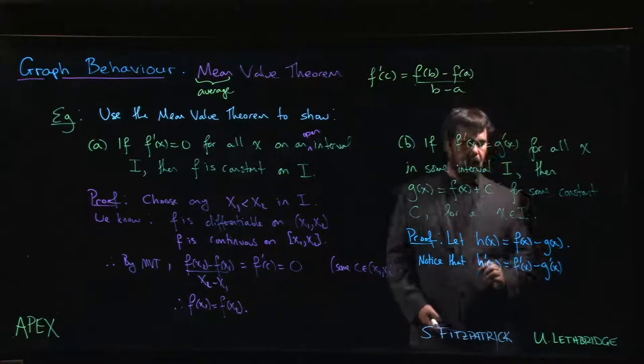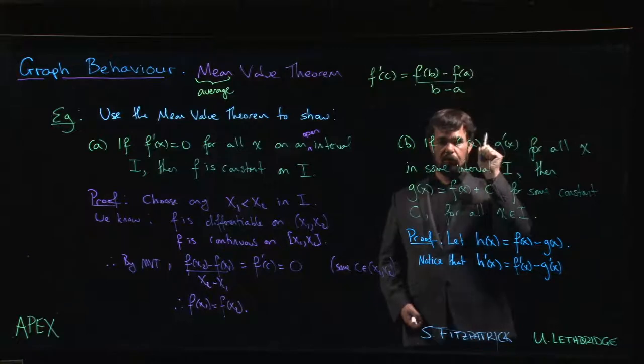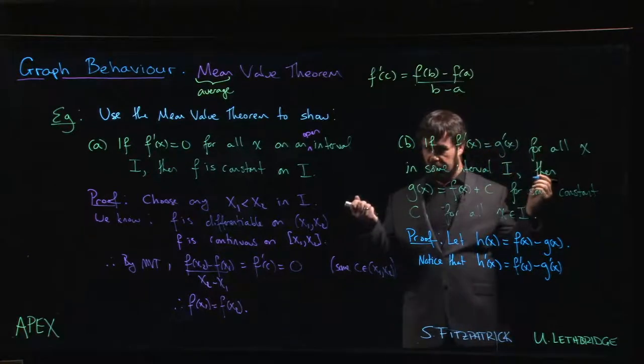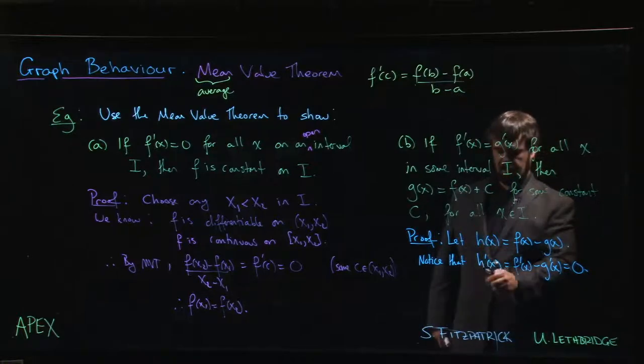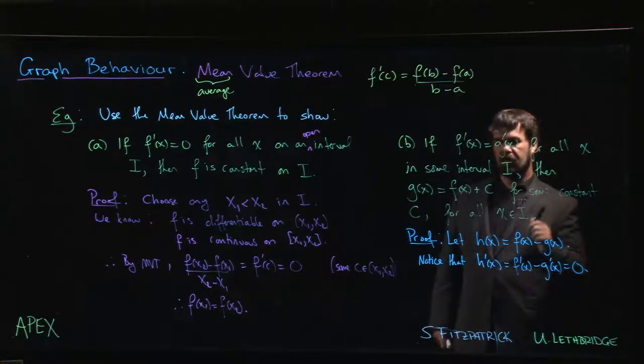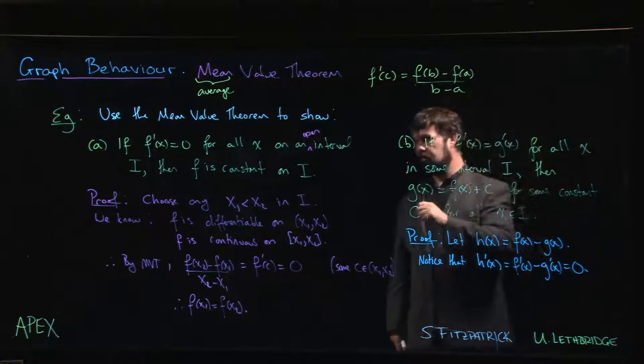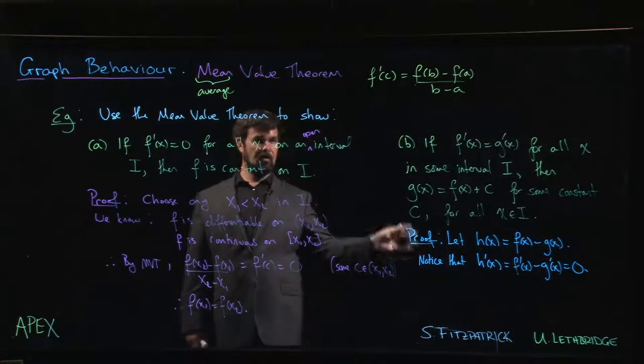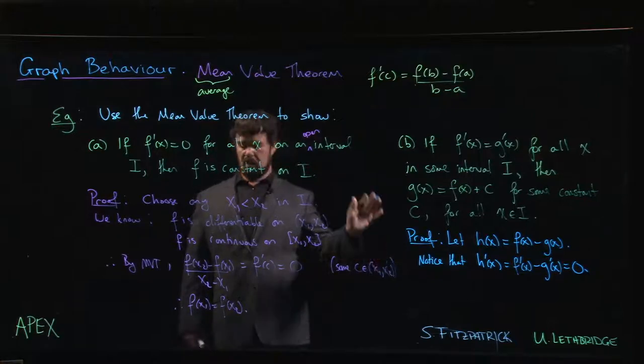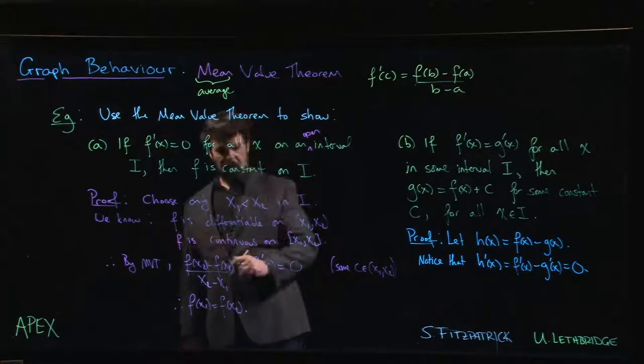But f′ equals g′, so what do you get if you subtract two things that are equal? You get zero. So that means that h′ is identically zero on our interval, which puts us back to part (a). We've got a function whose derivative is equal to zero on an interval, so we know that function has to be constant.